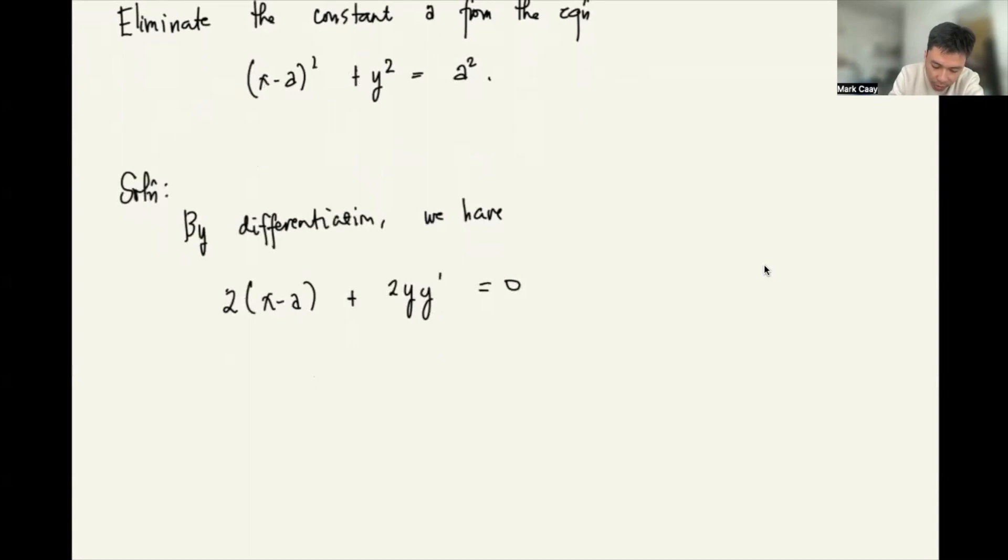This is 2 times x minus A plus 2y y prime equals zero. So can we solve for A? Solving for A, we have A equals x plus y y prime. I can divide both sides by 2. Let me detail this a bit. Dividing both sides by 2, we get x minus A plus y y prime equals zero.